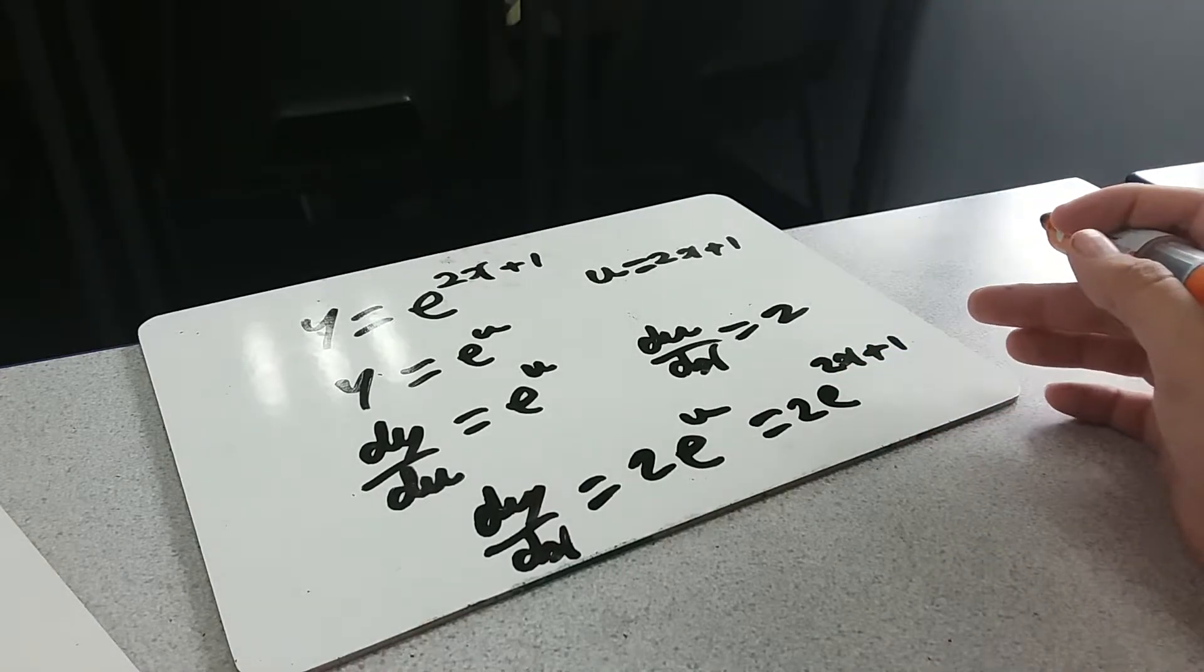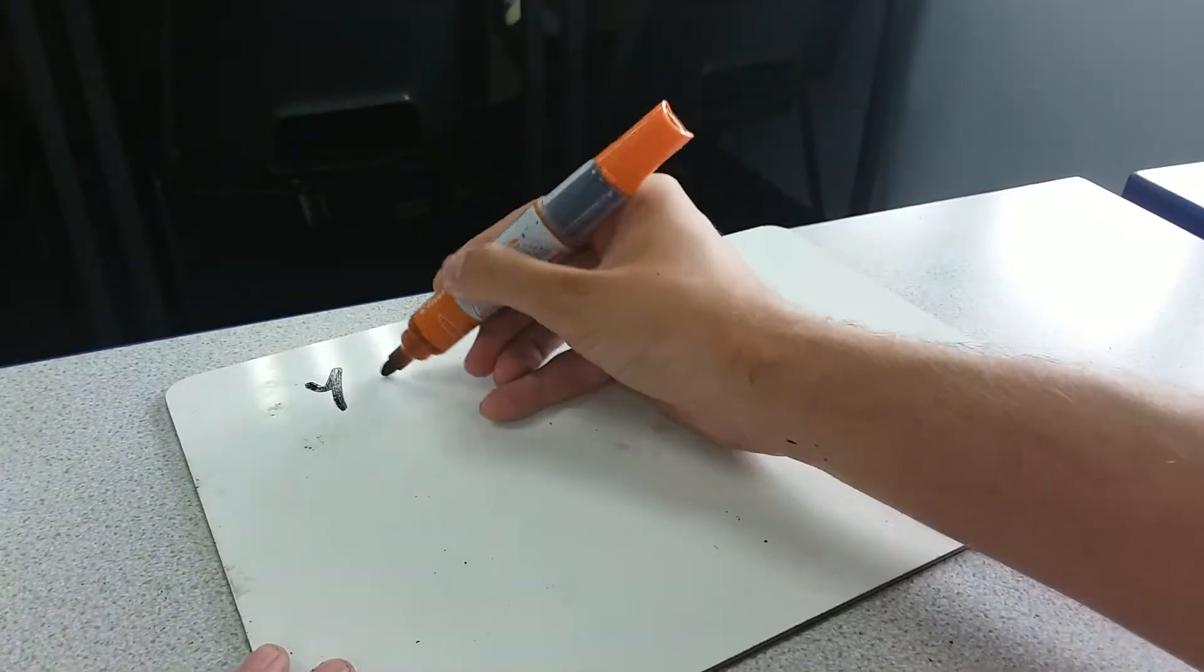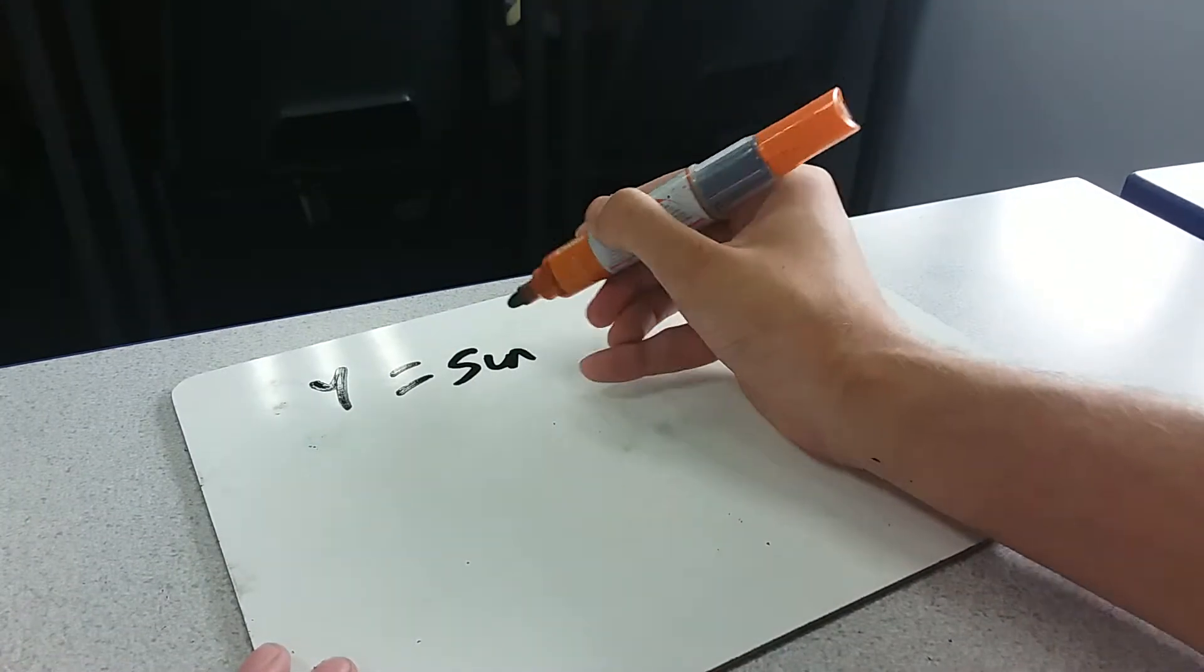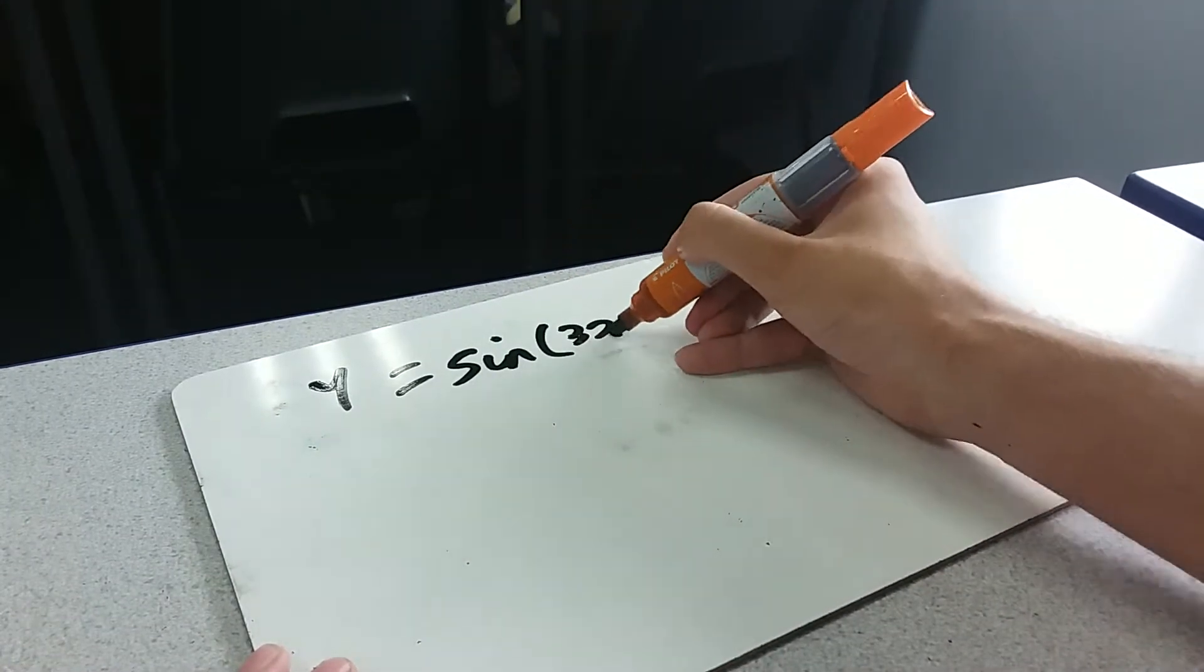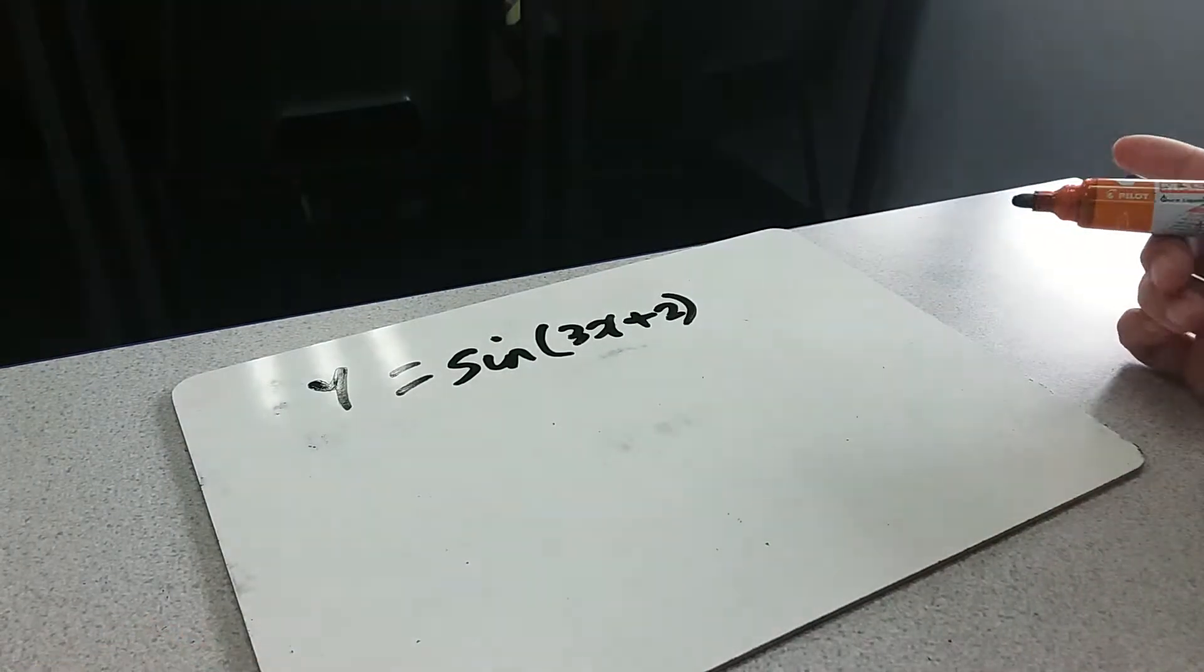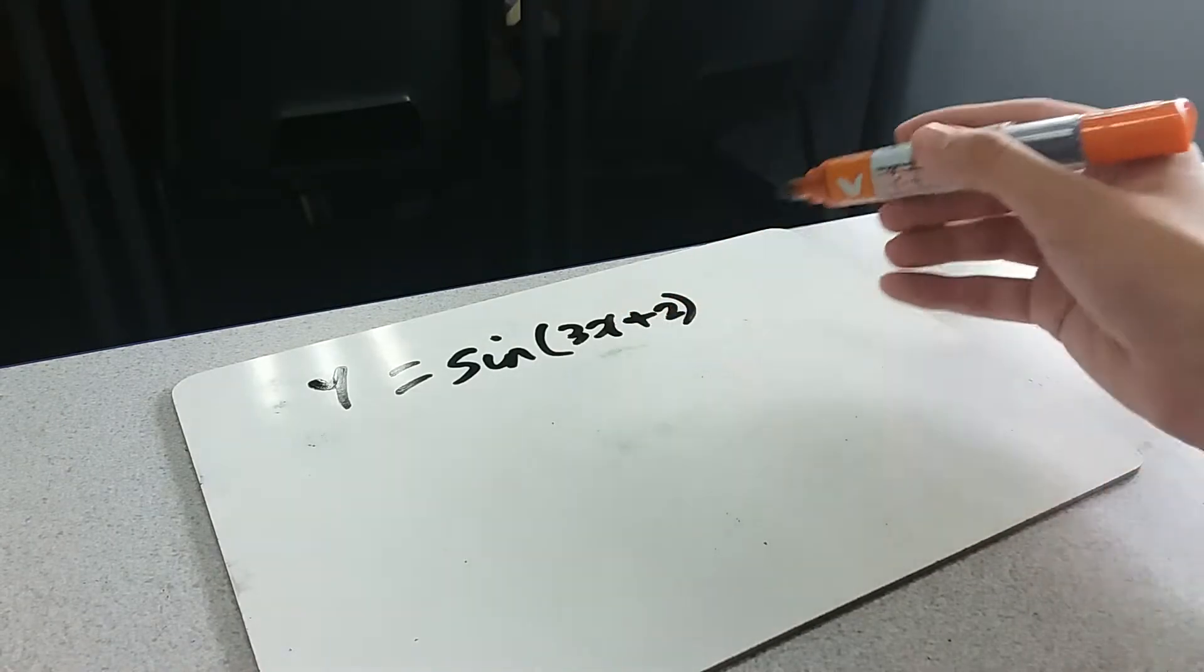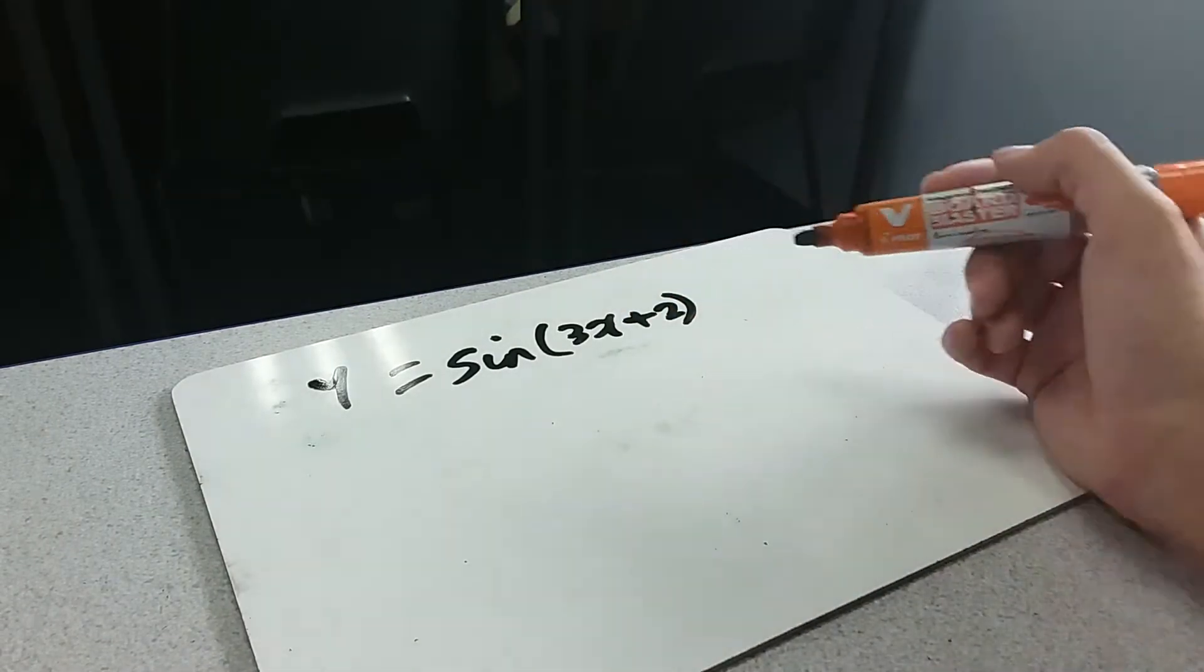So if I do a trig example for you as well. y equals, let's pick, sine of 3x plus 2. Something like that. Again, we could go through the whole motions of picking u equals the thing inside here, differentiating it up, and so on.